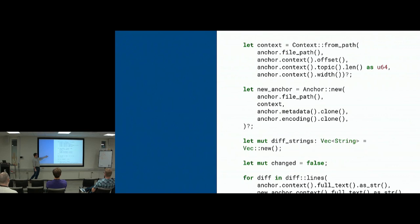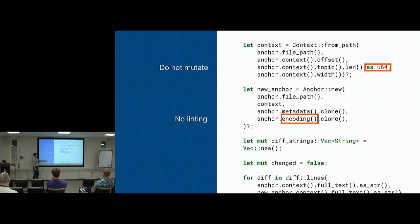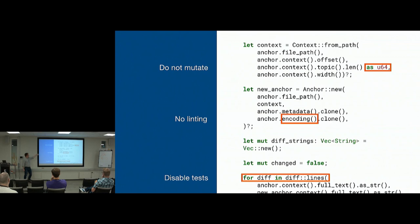When we talk about attaching metadata to programs, imagine some code — that's Rust. I might want to say, at that 'as U64' bit, don't mutate that for mutation testing. Or maybe don't do linting on this bit, or disable testing on this bit because the tests are known to be broken. Arbitrary kinds of things from different domains: linting, testing, mutation — yet we have metadata from all those domains somehow pointing at our code.